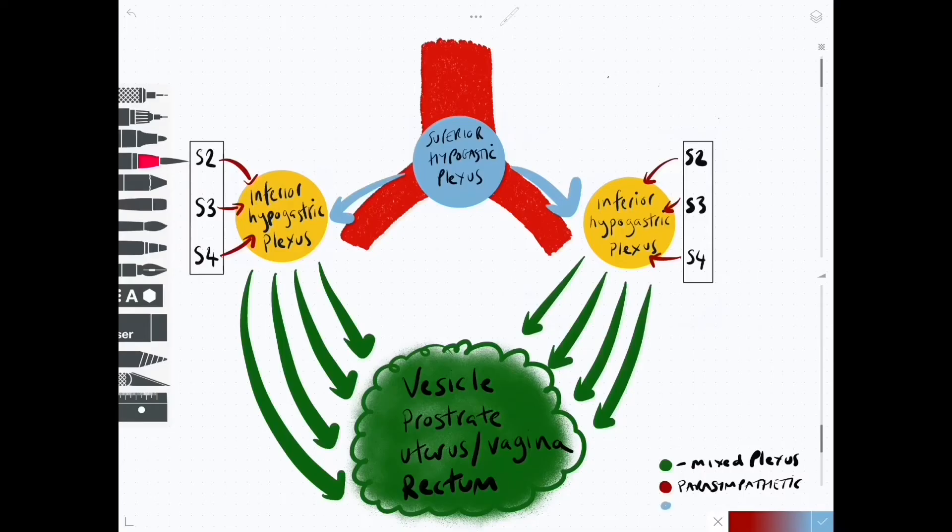So they will journey deep inside the pelvis across the pelvic brim in order to contribute to the inferior hypogastric plexus. So now we can see that our inferior hypogastric plexus is going to be a mixed plexus and we will draw a green circle around it to make sure that we know that it is mixed.